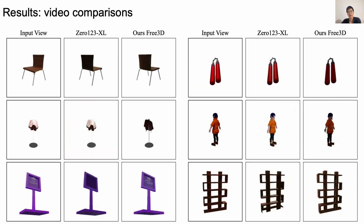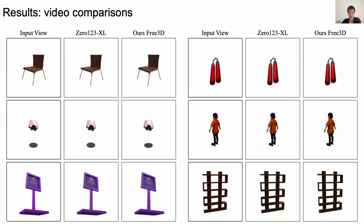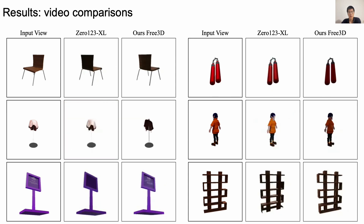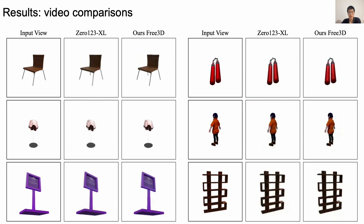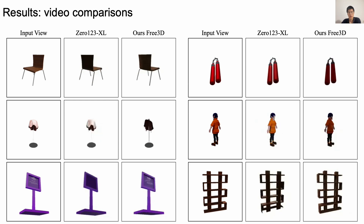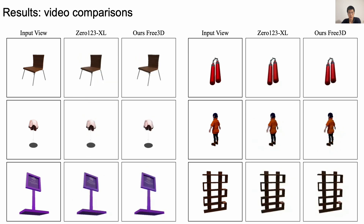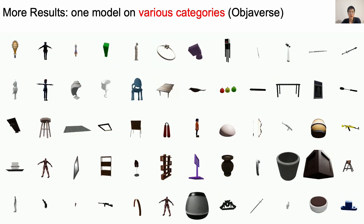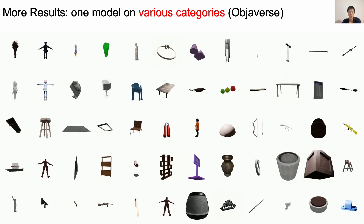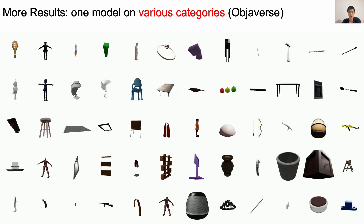Here we show qualitative comparisons of our model against the state-of-the-art Zero123XL. As we can see, our model can mitigate the flickering and incorrect pose present in Zero123XL, and output consistent video rendering without the need of any additional 3D representations. We also provide more rendered videos on the object dataset, and our model outputs consistent video without additional 3D representations.